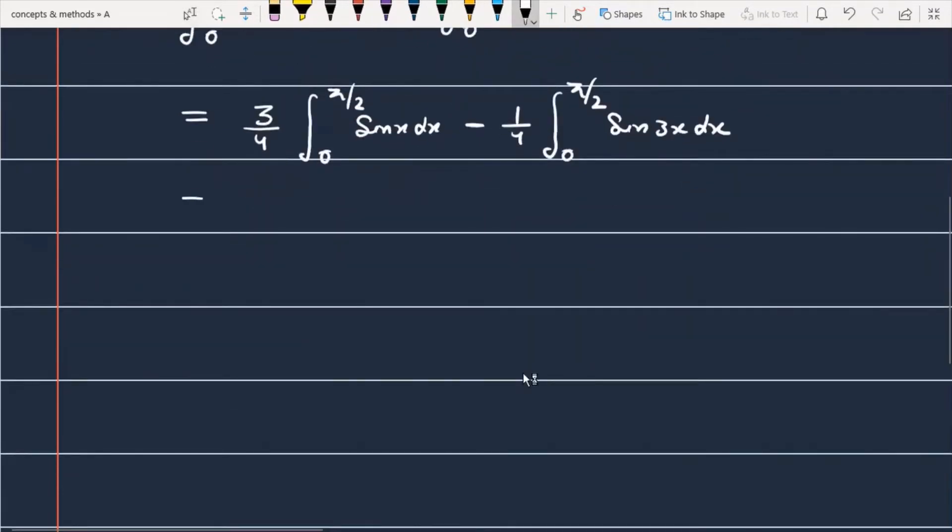We have to integrate this function and substitute the limits. So you can see this is 3 by 4 which is a constant. The integral of sin x is minus cos x between the limit 0 to π/2. Minus 1 by 4, the integral of sin 3x is minus cos 3x divided by 3, between the limit 0 to π/2.